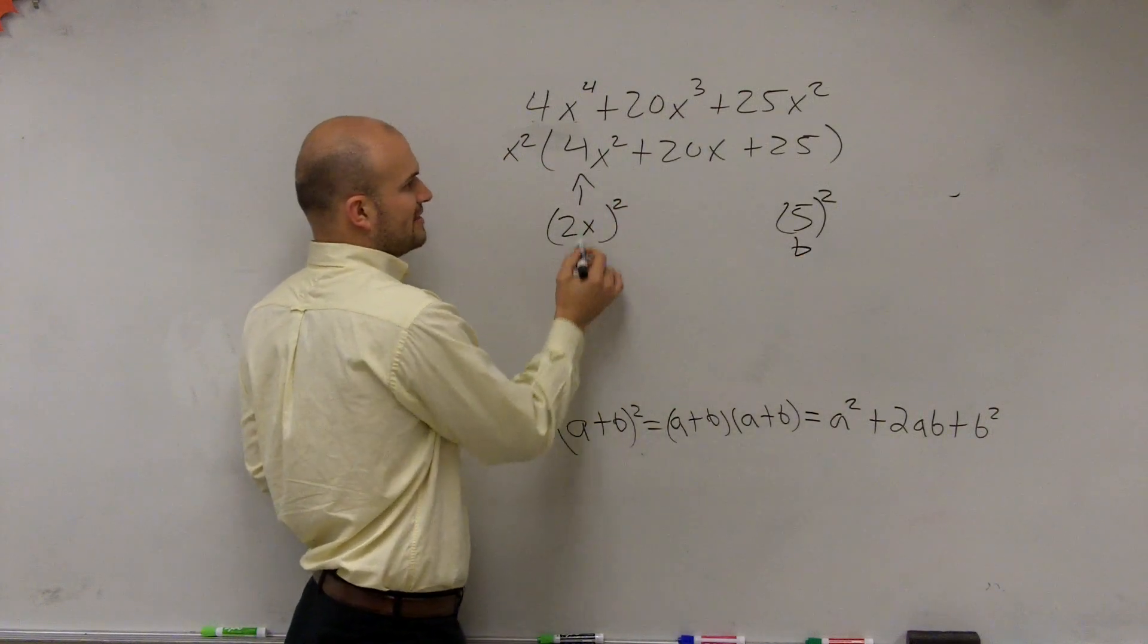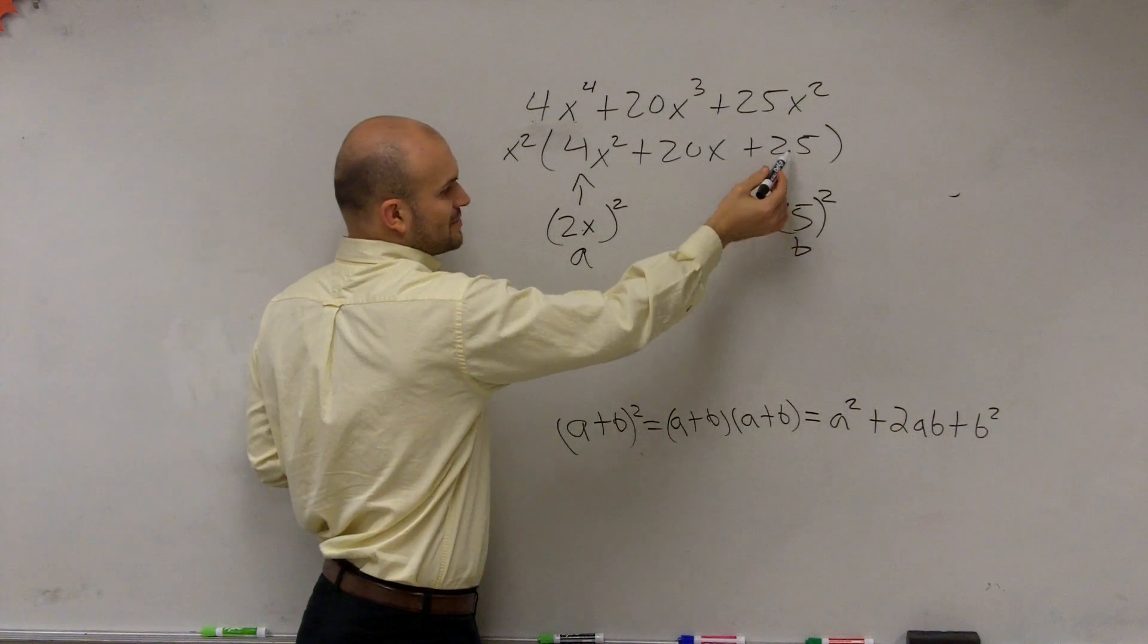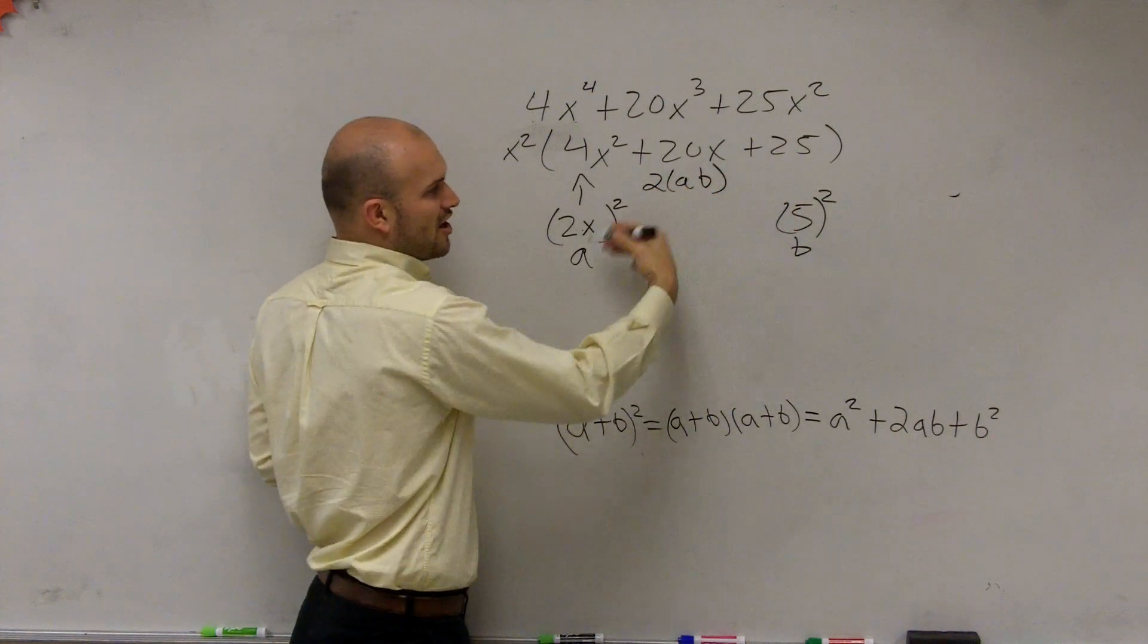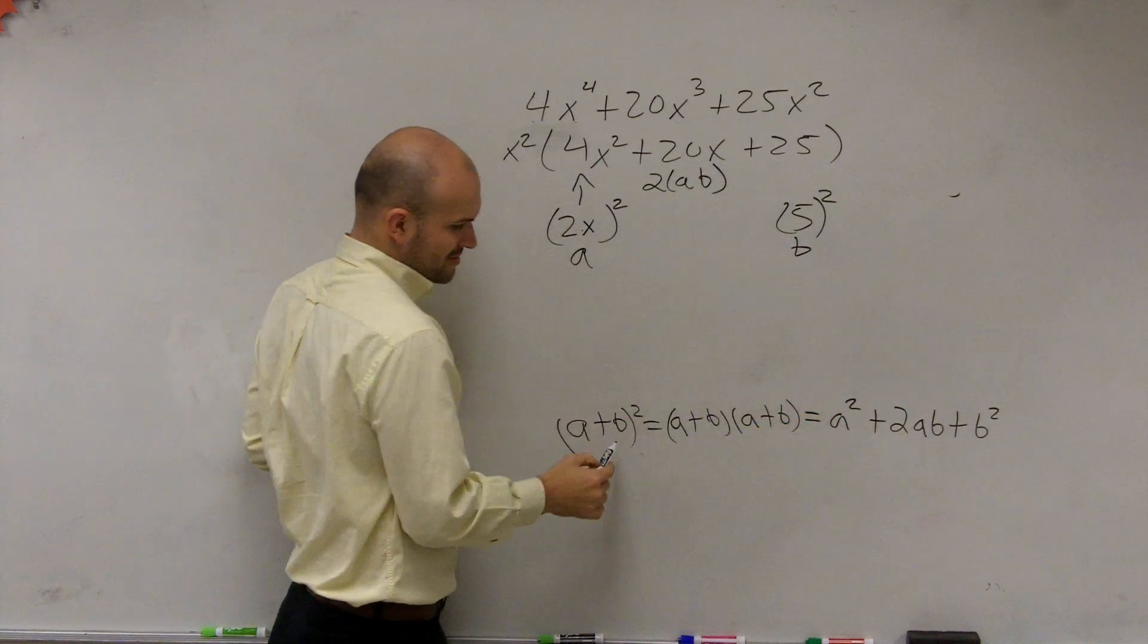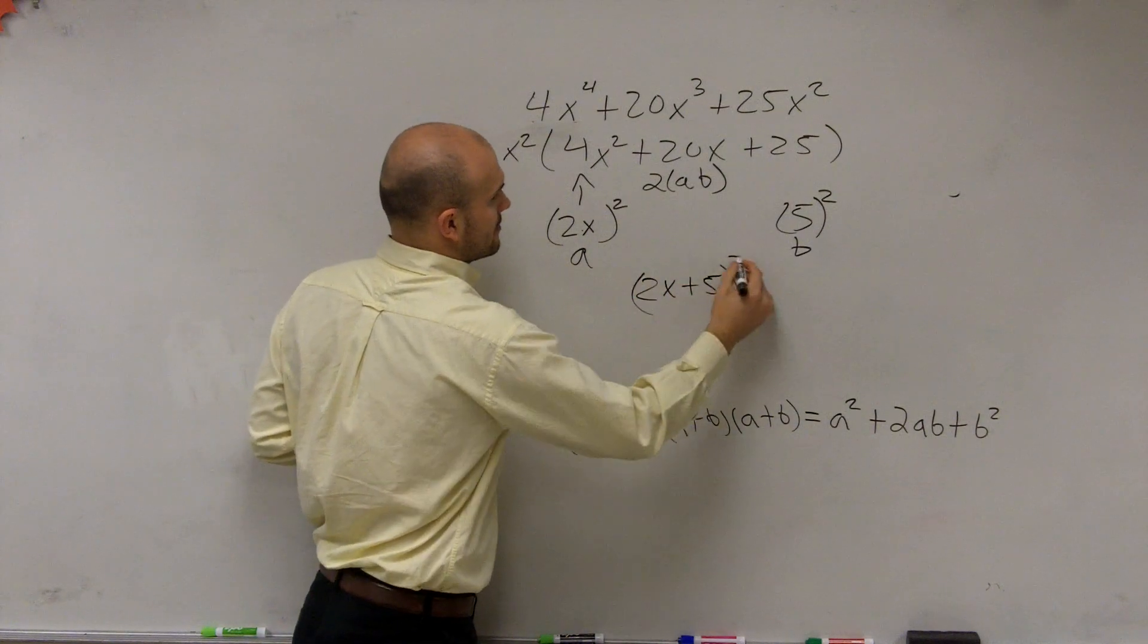And since I know that this is a squared, or this is a, then that's a squared. This is b, and that's b squared. And this is 2 times a times b. Well, then I automatically know already that this follows this trinomial. So I can write it as a factored form of 2x plus 5 squared.